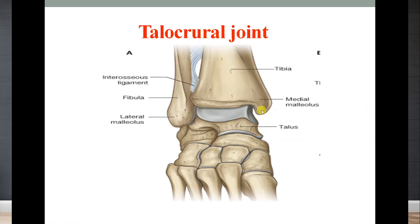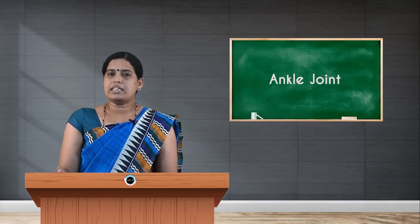These form the tibiofibular mortise — the inferior articular surface of the lower end of the tibia, the facet on the medial malleolus, and the facet on the lateral malleolus. The lower articular surface is the superior surface on the body of the talus, which articulates to form the ankle joint, also called the talocrural joint.